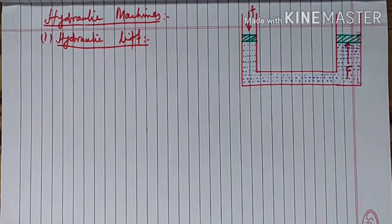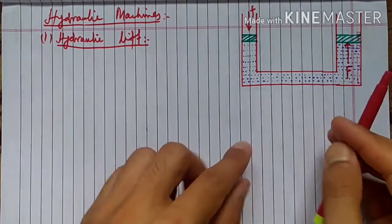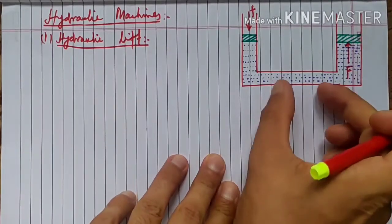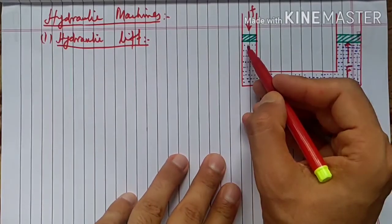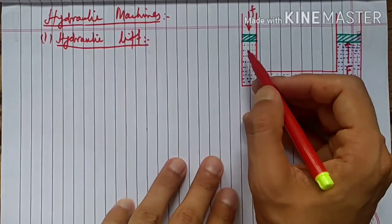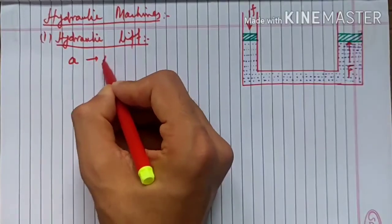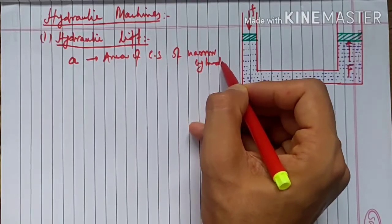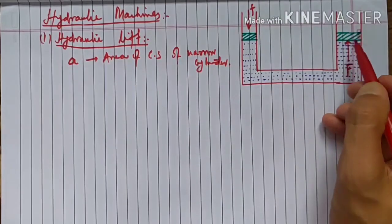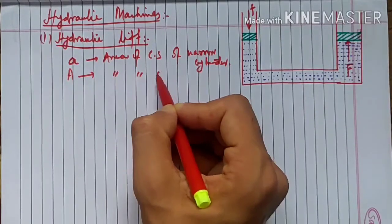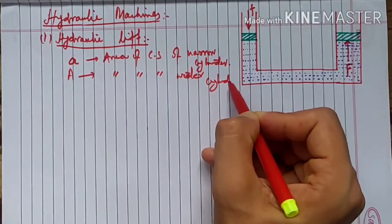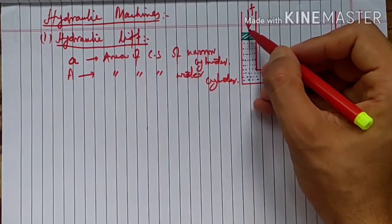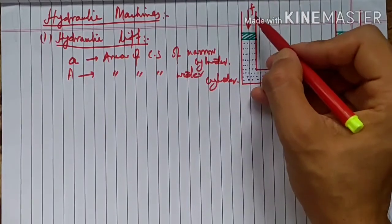Let's look at this diagram of a hydraulic lift. There is a horizontal container. On one side is a narrow slender cylinder with a small area of cross-section 'a', and on the other side is a wider slender cylinder with a larger area of cross-section 'A'. Each side has a piston.